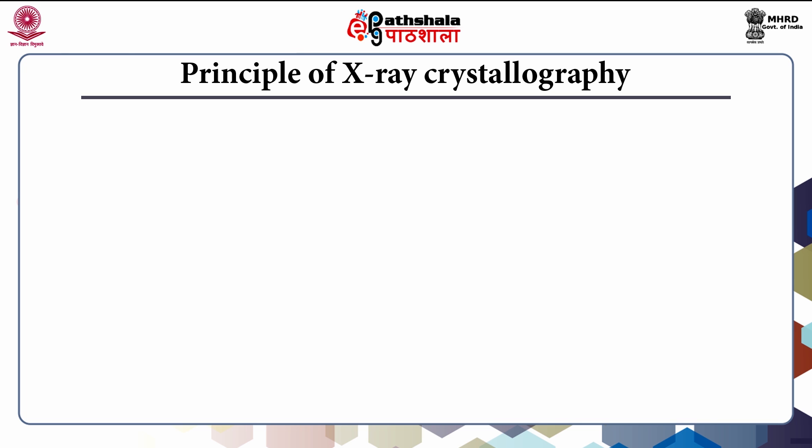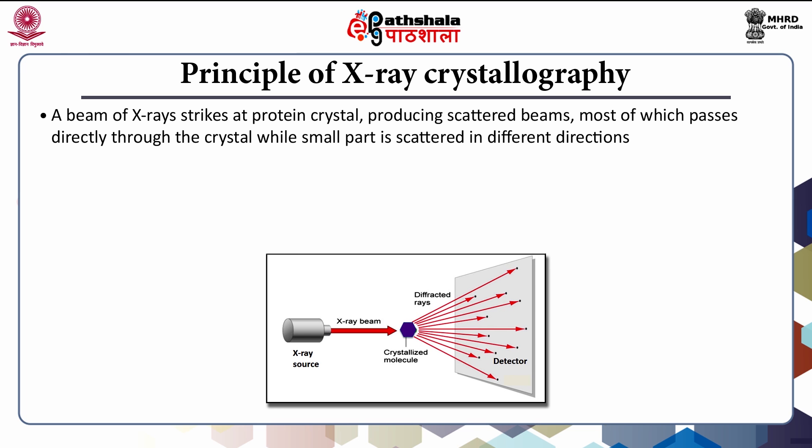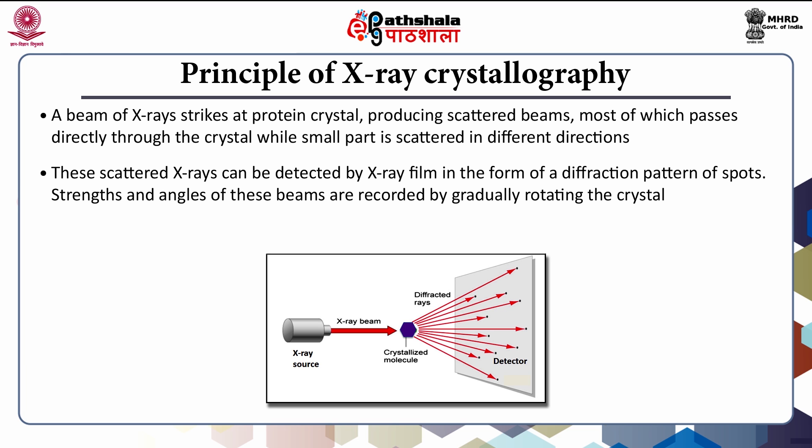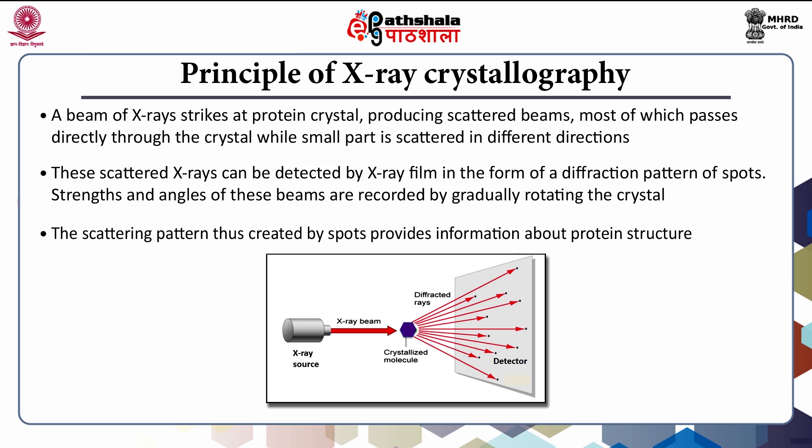Let us see the principles involved in X-ray crystallography. When a narrow beam of X-rays is directed at the protein crystal, most of the beam passes directly through the crystal while a small part is scattered in various directions. These scattered or diffracted X-rays can be detected by X-ray film or any solid-state electronic detector. The scattering pattern which comes onto the detector provides abundant information about the protein structure — the spots present on the X-ray film give information about the protein structure.